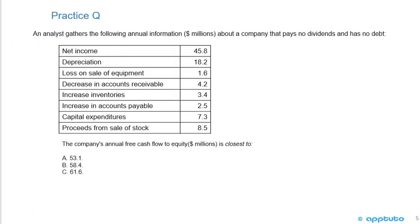Practice question: An analyst gathers the following annual information in millions about a company that pays no dividends and has no debt — net income 45.8, depreciation 8.2, loss on sale of equipment 1.6, decrease in accounts receivable 4.2, increase in inventories 3.4, increase in accounts payable 2.5, capital expenditures 7.3, and proceeds from sale of stock 8.5. The company's annual free cash flow to equity in millions is closest to: A) 53.1, B) 58.4, or C) 61.6.